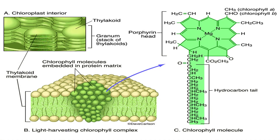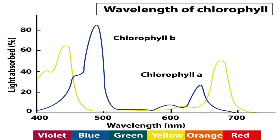As we discussed in the previous slide, here in this diagram we can see the chloroplast interior structure and light-harvesting chlorophyll complex structures, and a chlorophyll molecule with a head of porphyrin and a hydrocarbon tail. This chart indicates the wavelength of chlorophyll where the light-absorbed percentage occurs.